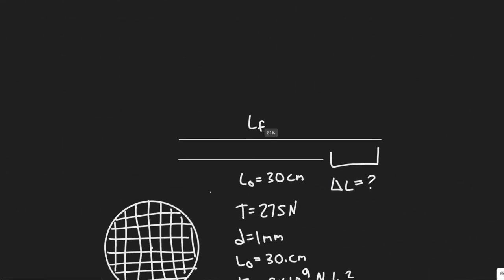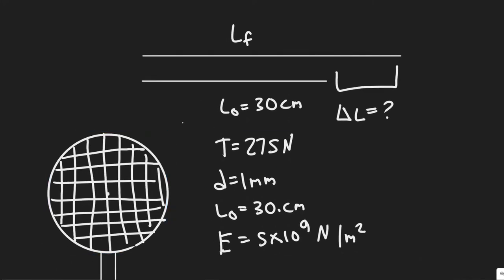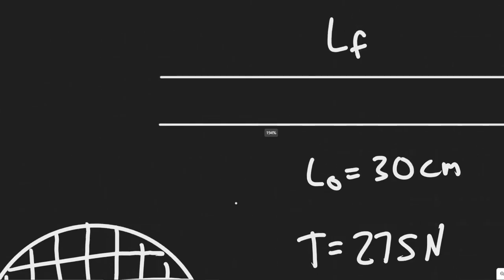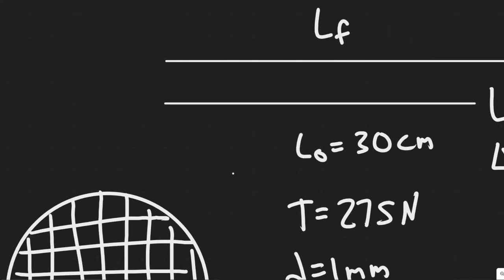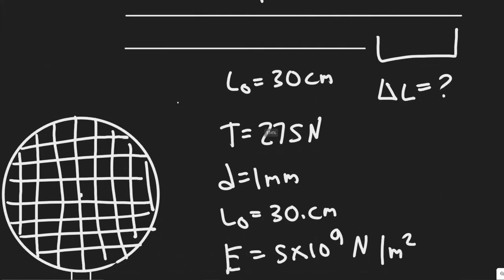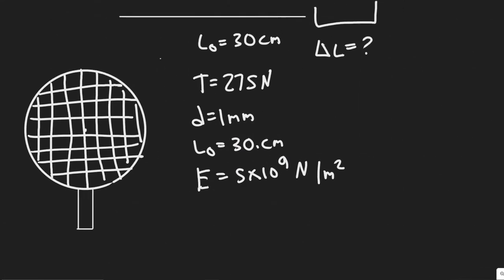And so we're given some information like the tension, the diameter of our racket here. We're just going to assume it's circular, the cord or the string. And we also know the initial length, and this is something else we're going to use to solve.